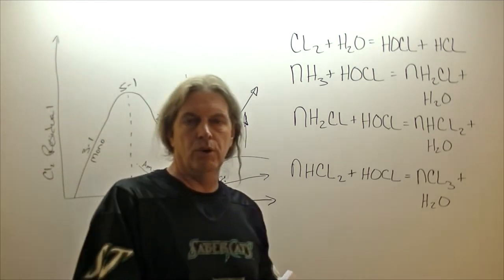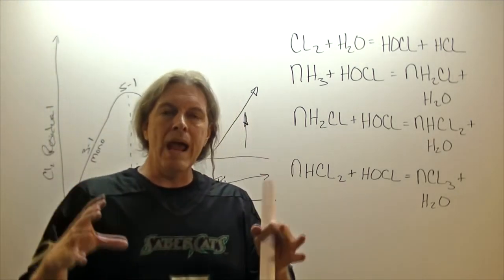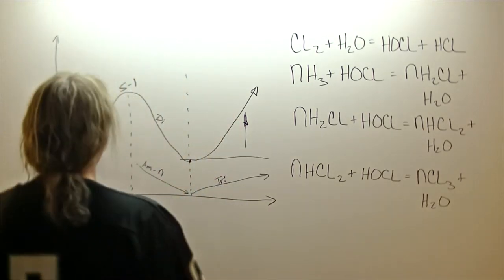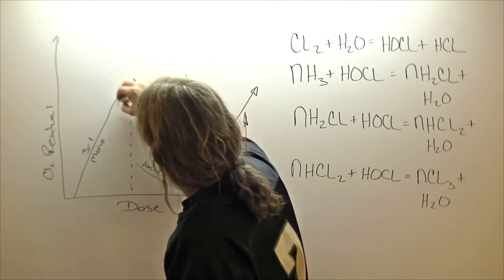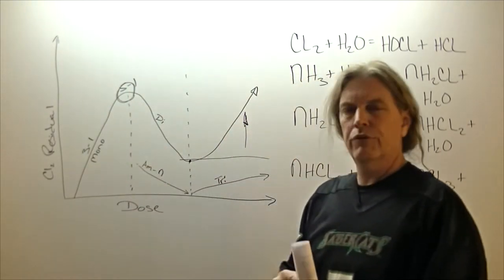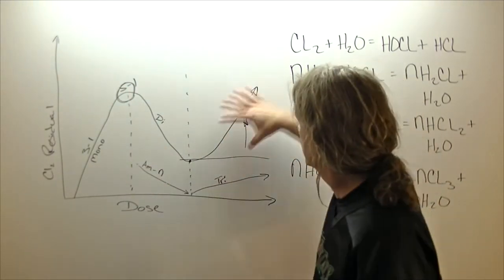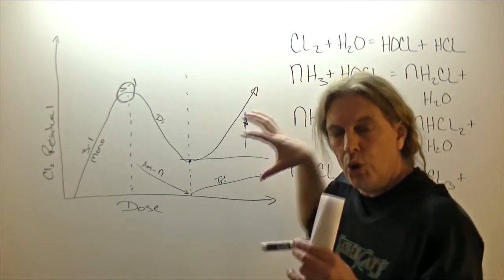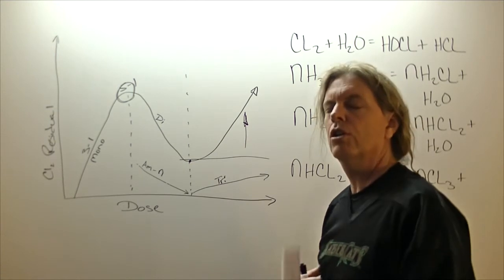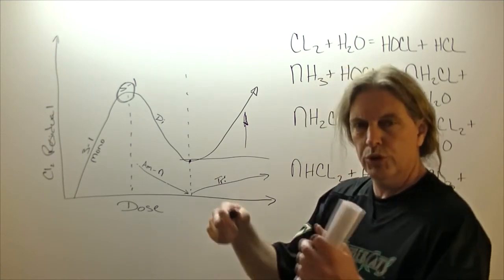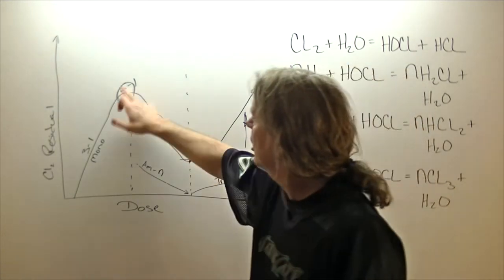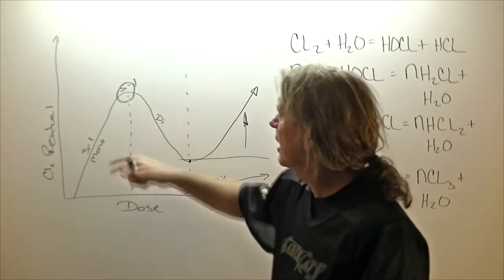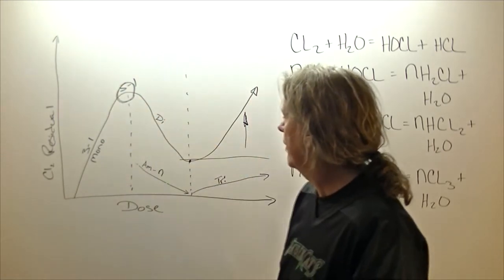So, when we are chloraminating our waters, we want to make sure we stay right around here. Obviously, if we were chlorinating our waters, we want a free chlorine residual, we want to be over here. But if our choice that we're going with is chloramination, if we're treating with chloramines, we want to be right here, and we want to be in this range of 3 to 1 to 5 to 1. A lot of places kind of sit right around 4 to 1 to 5 to 1 right there.